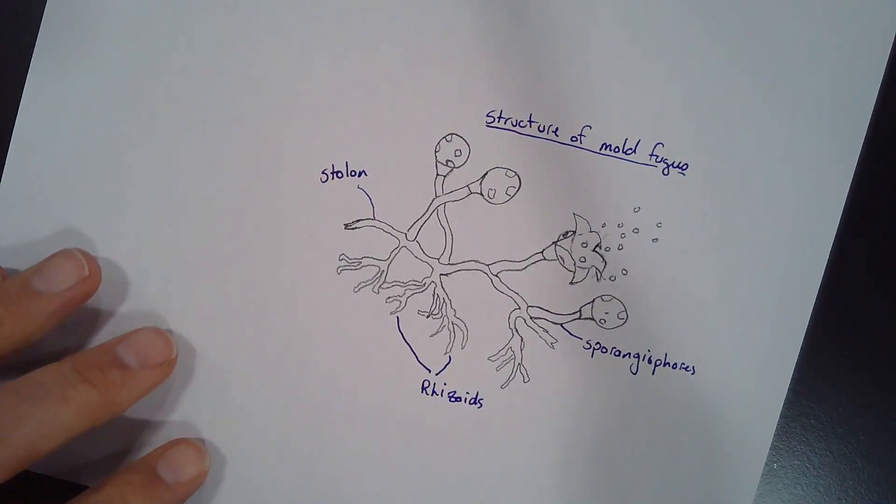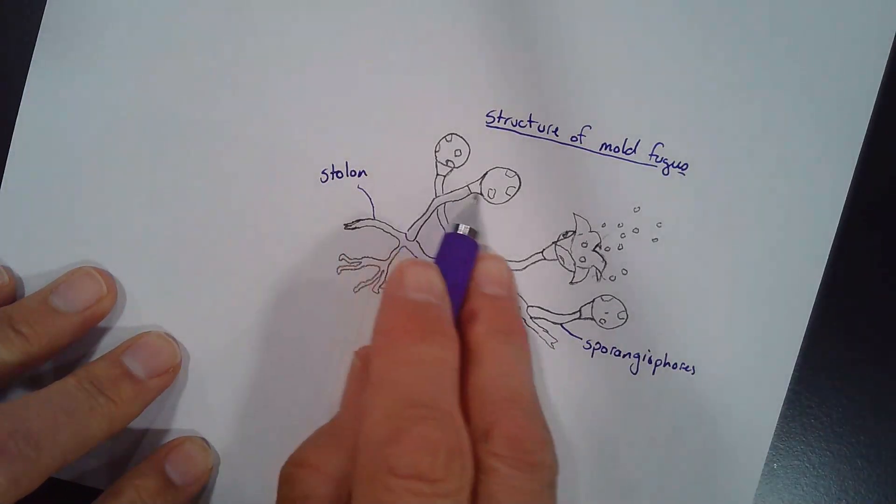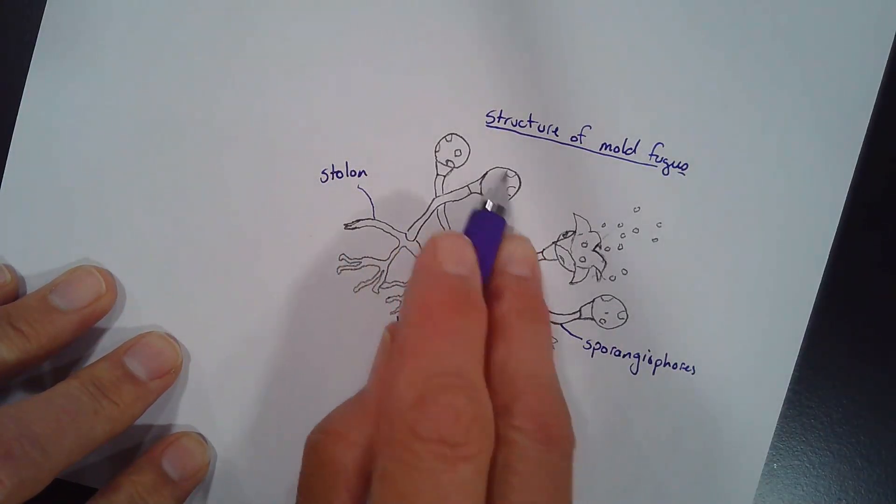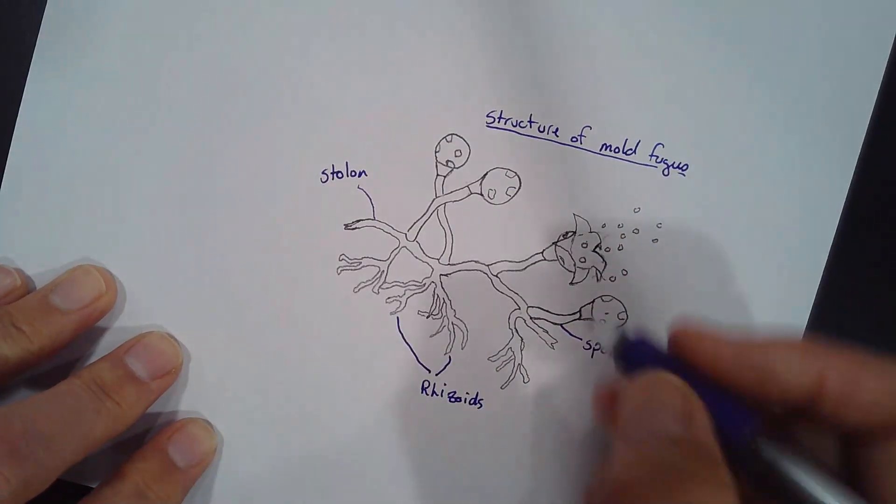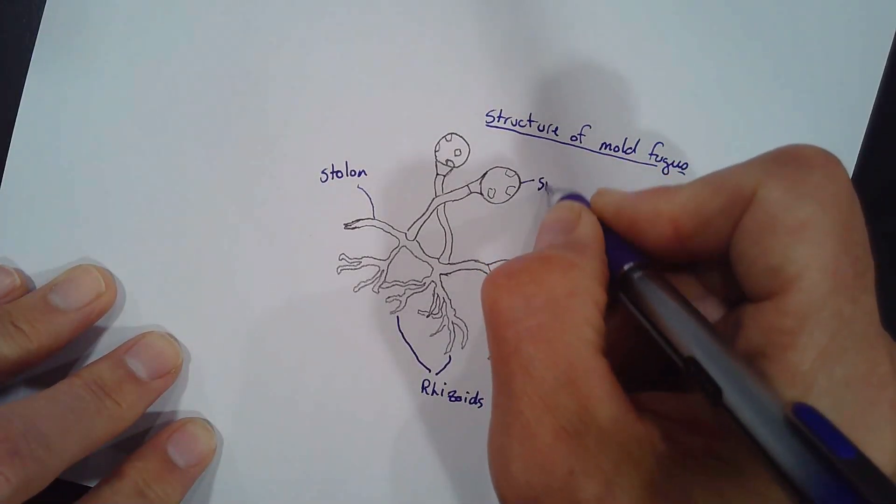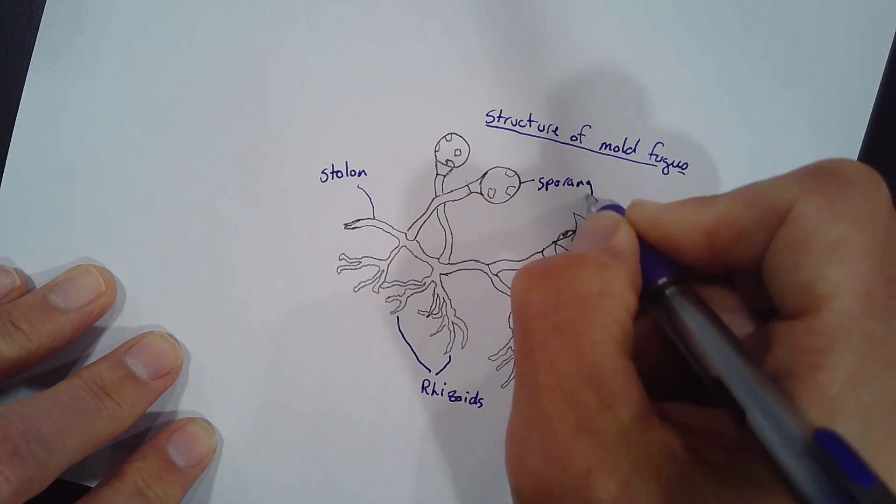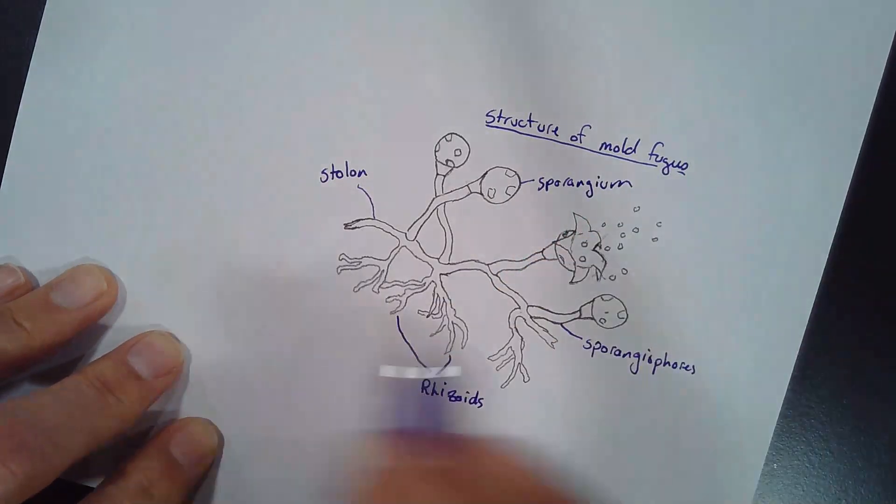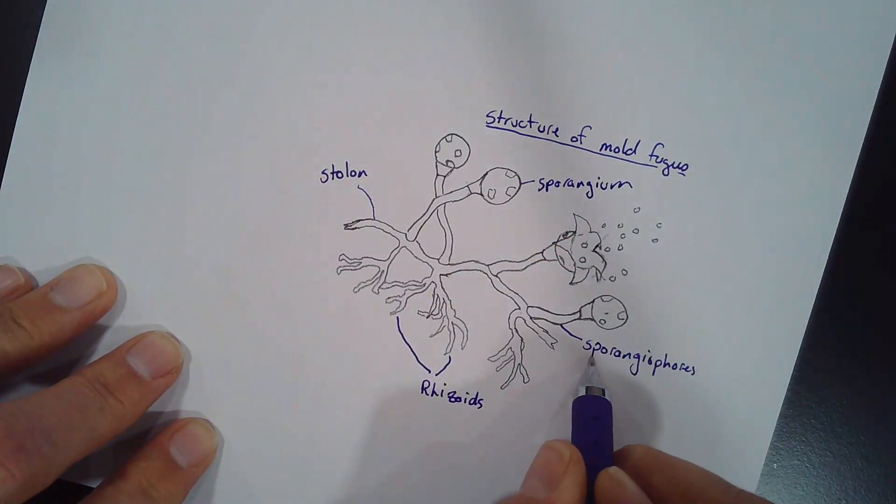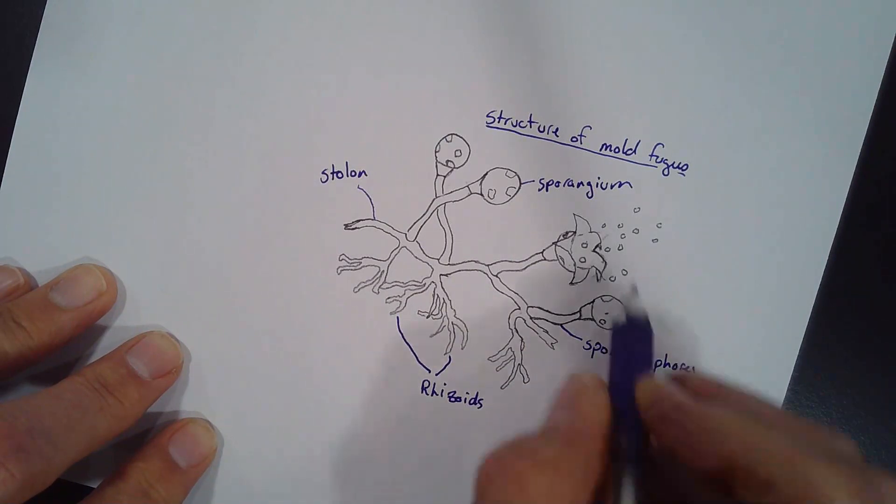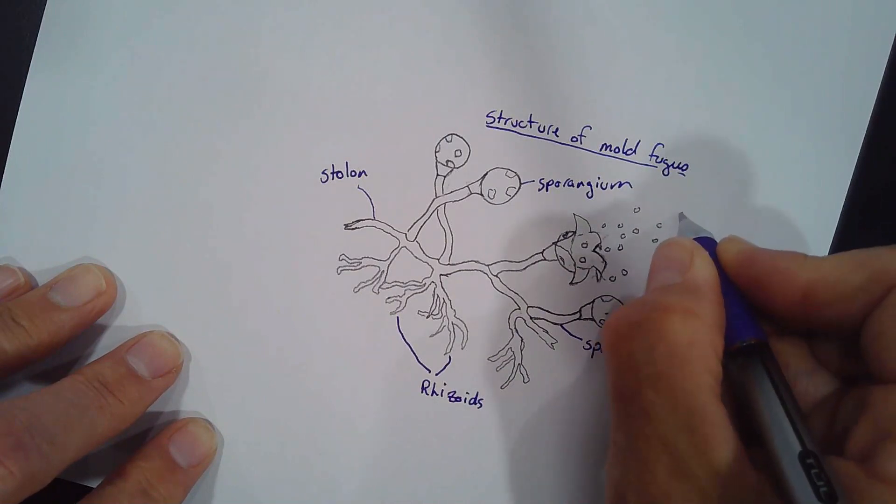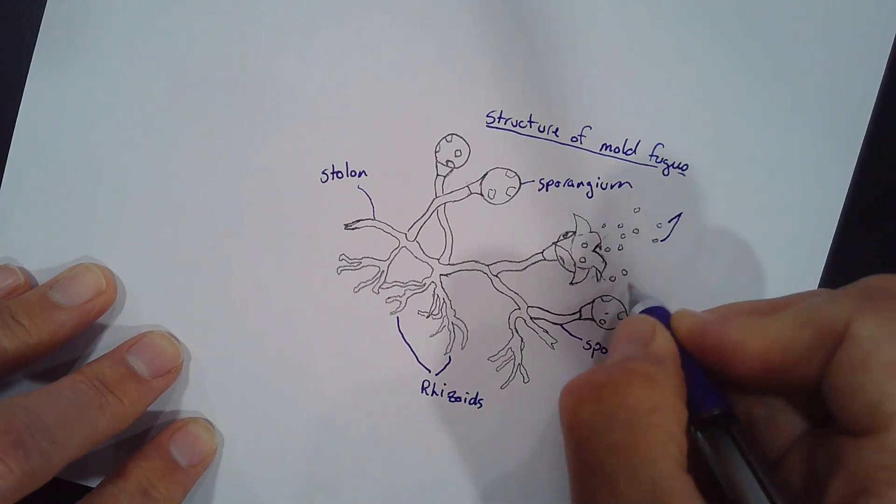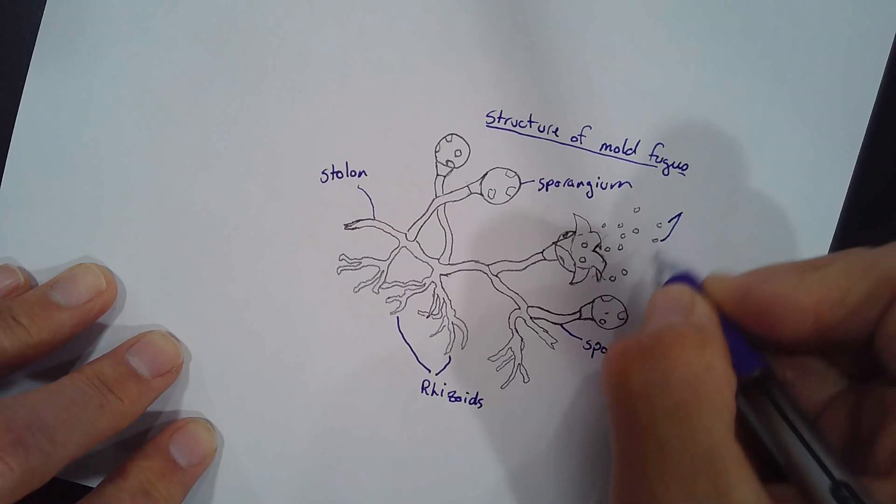This actually has kind of like that mushroom top shape to it, and this is called a sporangium. Notice that sporangiophore and sporangium both have the word spore in them. These little guys here, they kind of burst out of this sporangium.